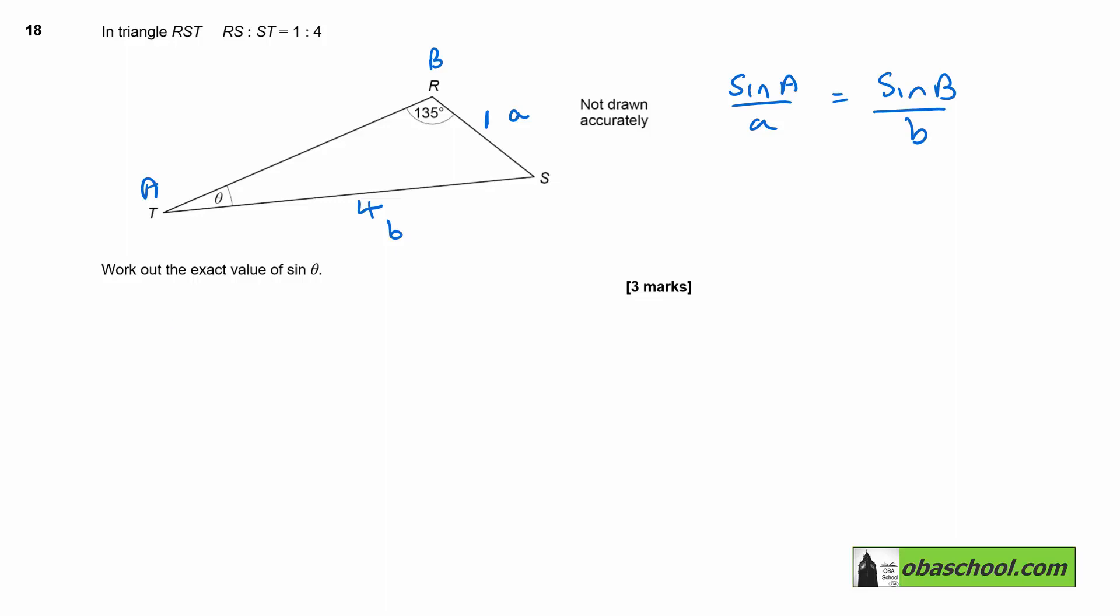Let's put our values into that. Sine θ divided by 1 would be equal to sine 135° divided by 4. So sine θ is just going to be sine 135° divided by 4.